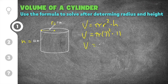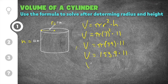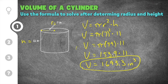After you substitute in, you have to follow the order of operations. First you handle exponents: 7 squared is 49, giving us pi times 49 times 11. Then multiply left to right: pi times 49 is approximately 153.9, and 153.9 times 11 gives 1,693.3. Our final solution is 1,693.3 inches cubed for the volume of this cylinder, because volume is always in cubic units.